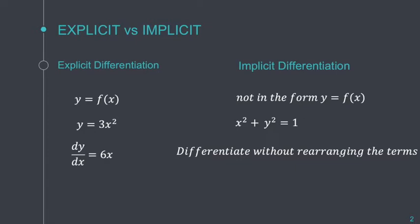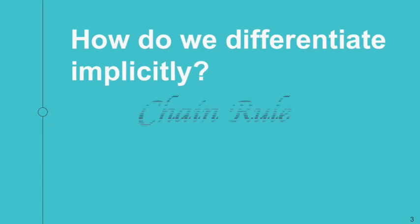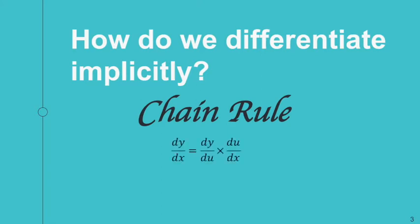The question now is: how do we differentiate implicitly? One important rule that we need in implicit differentiation is the chain rule. The chain rule, as we recall, is dy/dx = dy/dx. This is an important rule in implicit differentiation.